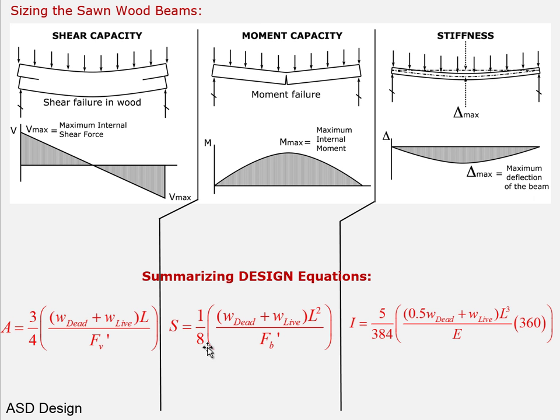With the lookup table established, once we calculate the required area, section modulus, and moment of inertia, we simply look up whether a 2×6, 2×8, 2×10, or 2×12 is needed. We know the span — we'll use 16 feet as a challenging length for solid sawn lumber. Next we assess loads, starting with dead loads and using upper-limit values.